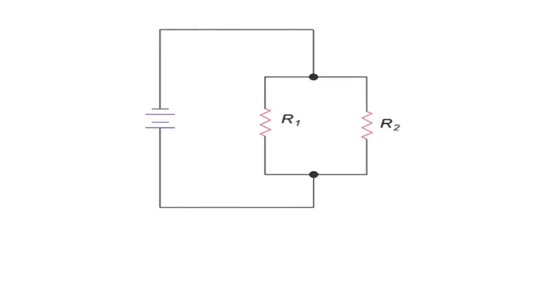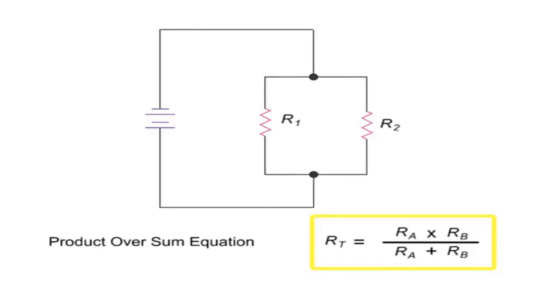Calculating the total resistance of resistors in a parallel circuit requires the use of the product over sum equation. In this parallel circuit, if R1 is 50 and R2 is 80, then the combined or equivalent resistance of the two resistors would be 50 times 80, or 4000 divided by 130, which is 30.7 ohms.